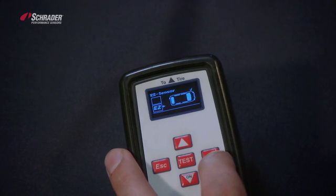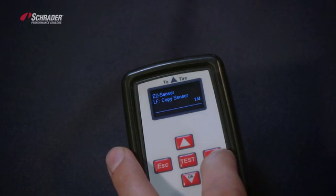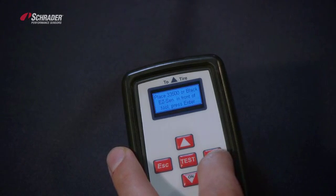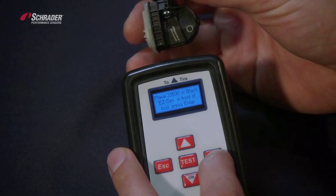We're going to select the EZ sensor. As you can see on the screen, it says copy sensor. It tells us to place the 33500 or black EZ sensor in front of the tool.